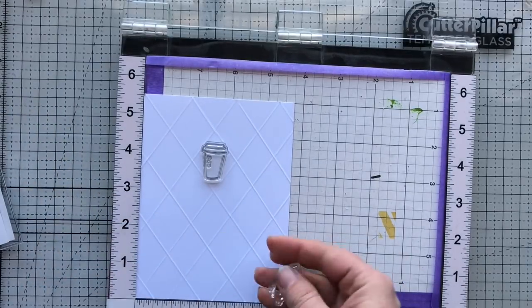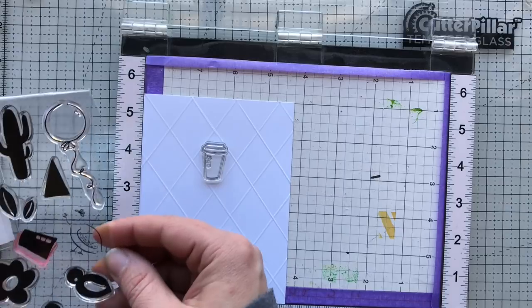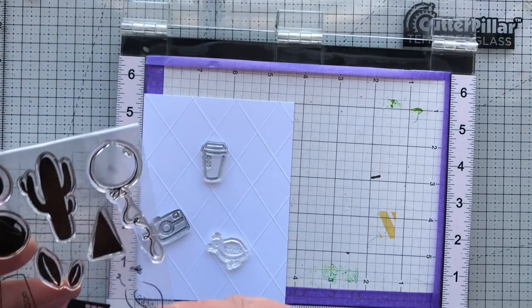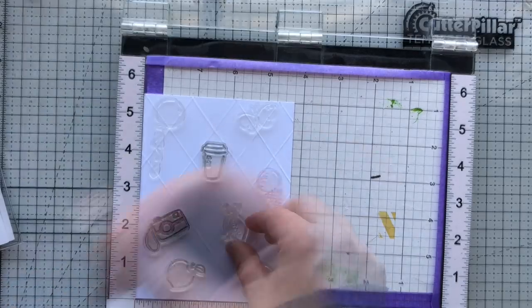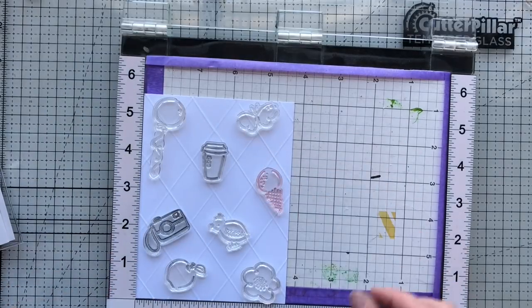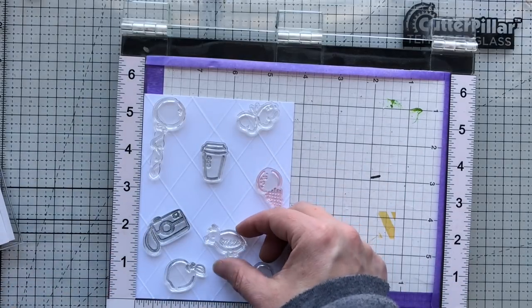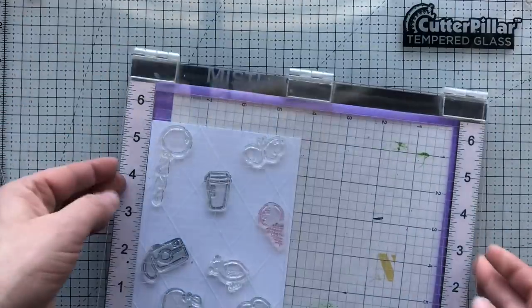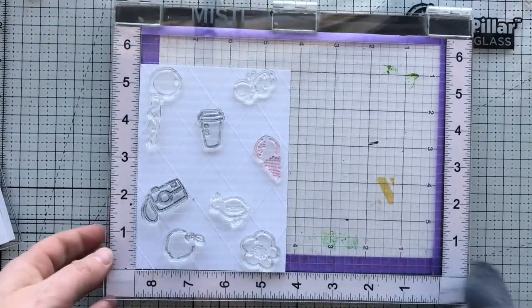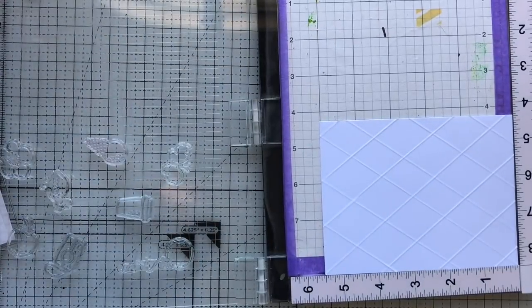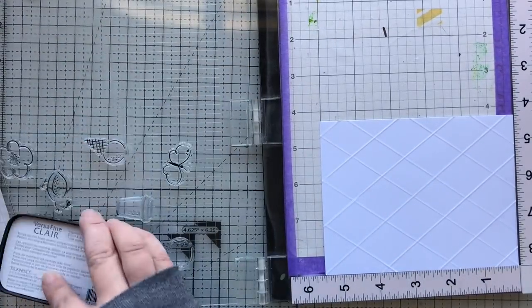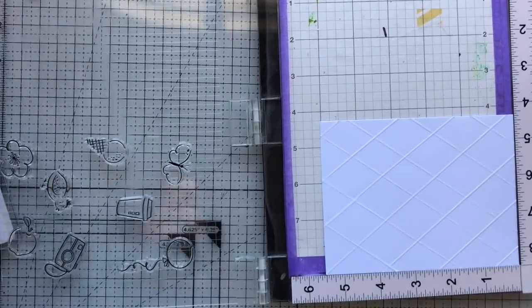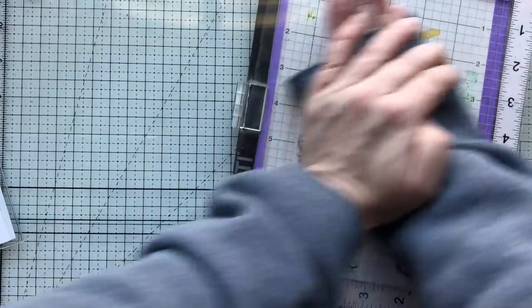I'm taking this cute new stamp set from Ellen Hutson - it's called Everyday Doodles - and I'm just going to line up the images. It has an outline image and then see all the solids there, those are like fillers if you will, so you can ink them up with different colors which is what I'm going to do. I'm using my MISTI stamping tool for easy placement. I'll ink that up with black ink, then I'll line up the inside images the exact same way and stamp them with various color inks.